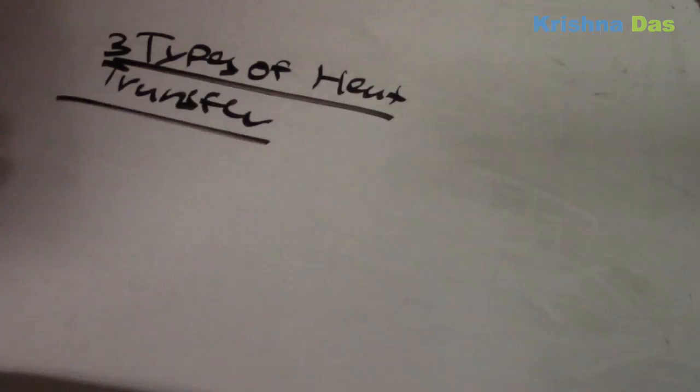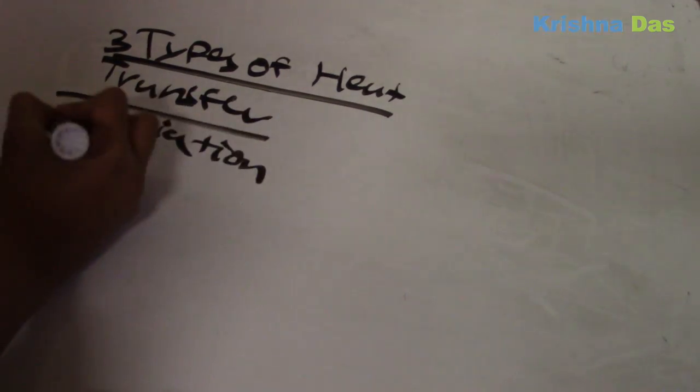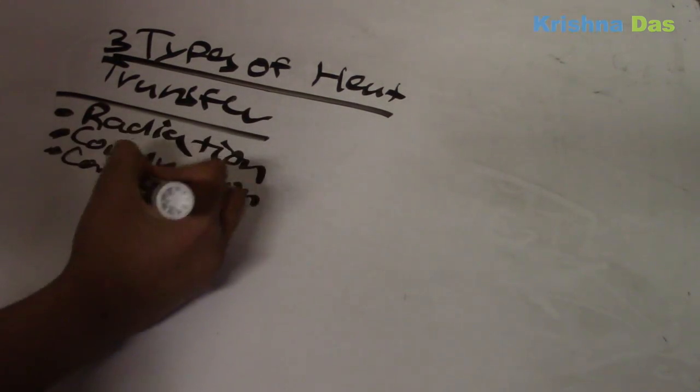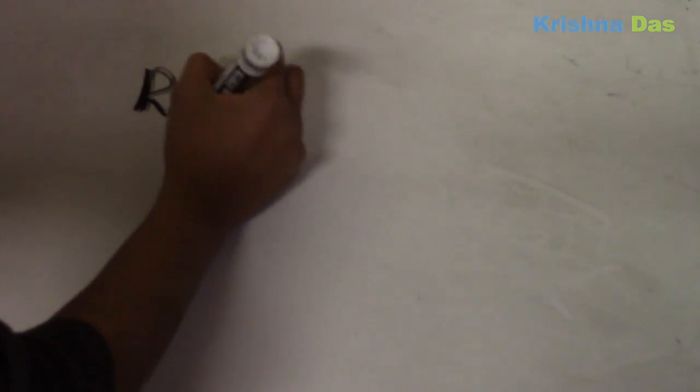This is scientifically episode two, the three types of heat transfer. Number one is radiation, number two is conduction, and number three is convection. We're going to explain each and every type of heat transfer.